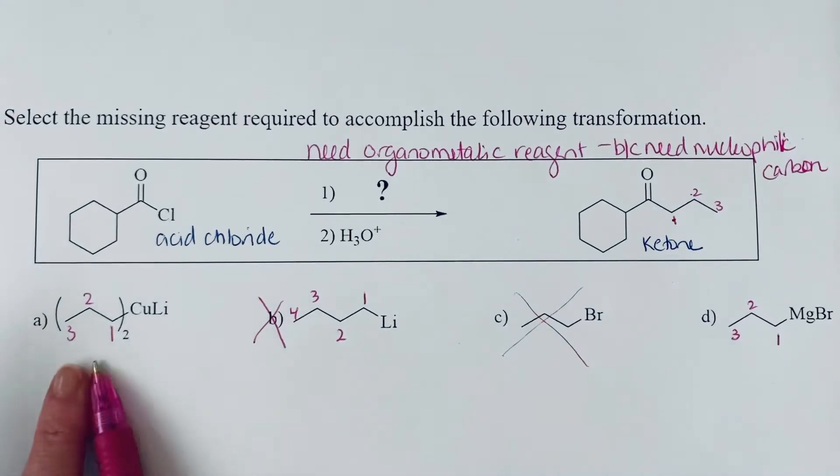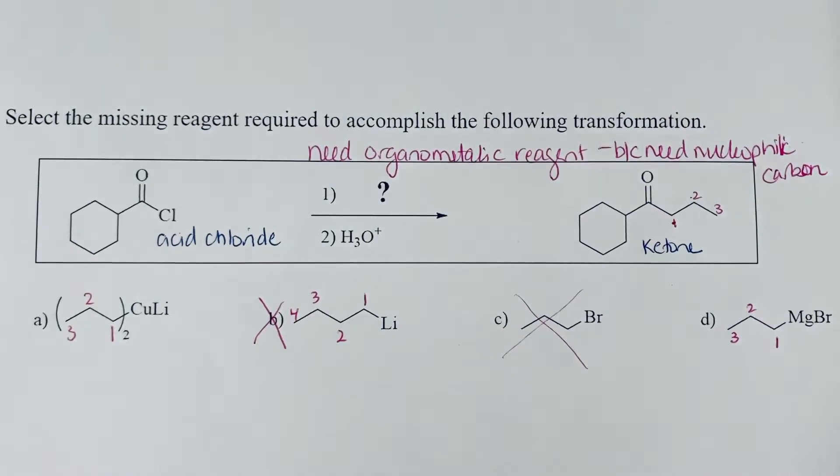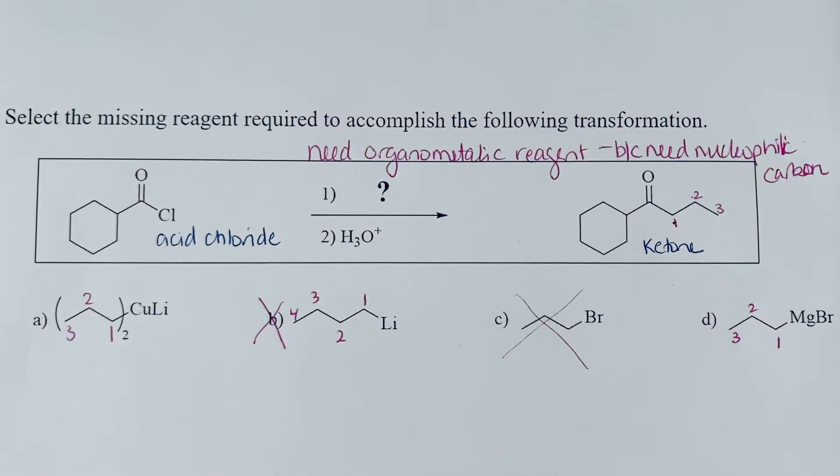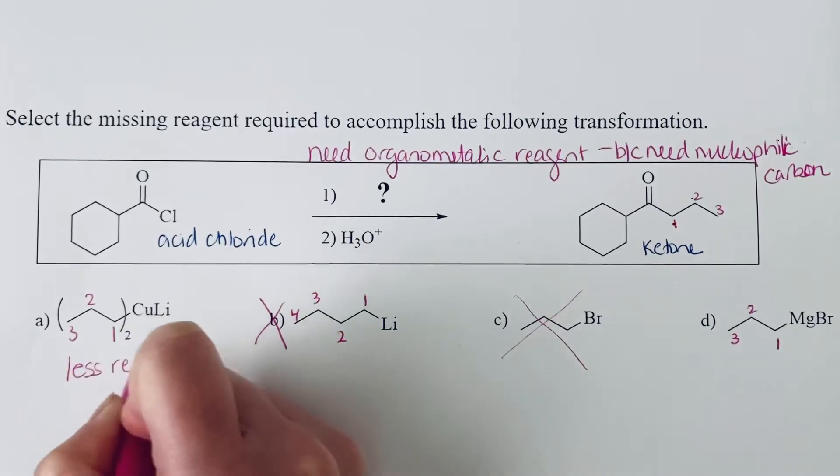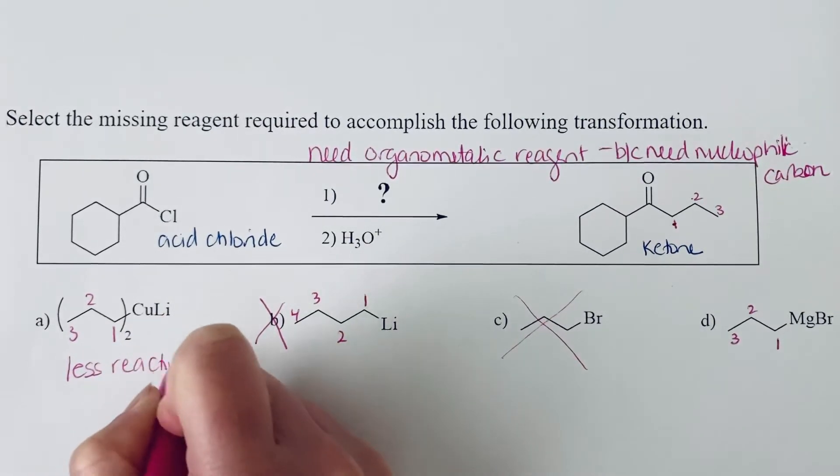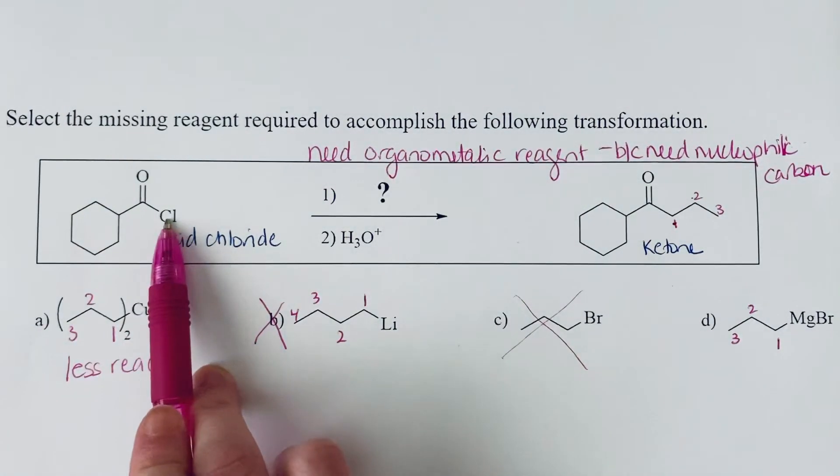So in deciding between the cuprate and the Grignard, here's what we want to recognize. We want to pick the less reactive organometallic reagent. So the cuprate is less reactive.